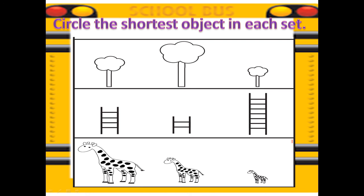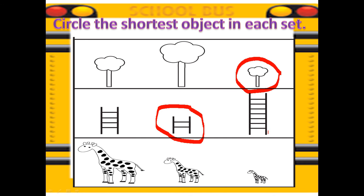We have another set. First, trees — which is the shortest tree in this set? One, two, three. Well done — this is the shortest tree. Ladder — ready? One, two, three. Well done. And the last one is a set of giraffes — which is the shortest giraffe? One, two, three. Well done, KGs.